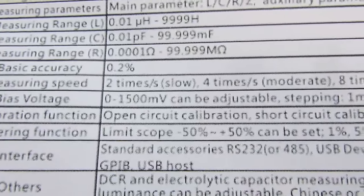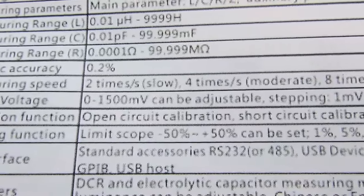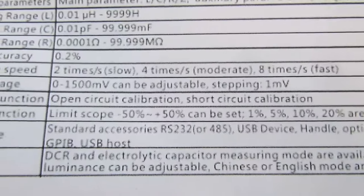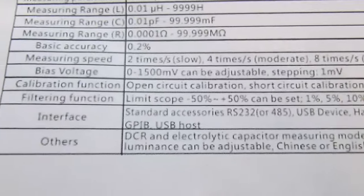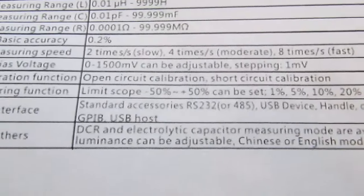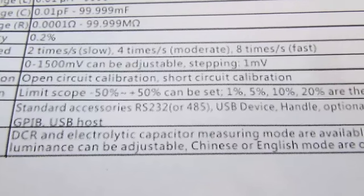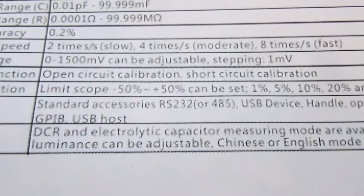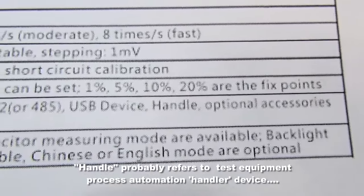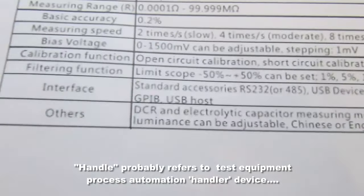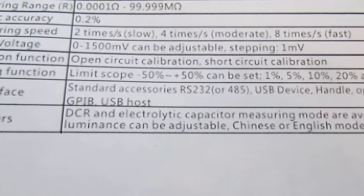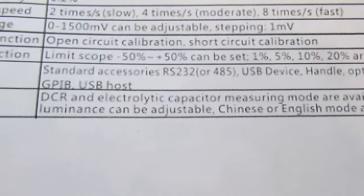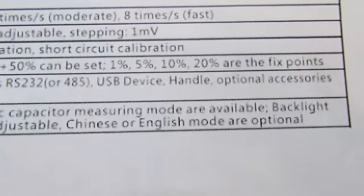It can have a bias voltage of 0 to 1500 millivolts, adjustable or stepping in 1 millivolt increments. Open circuit calibration, short circuit calibration. It has various interfaces like RS-232 or RS-485, USB, GPIB. It can measure DCR and electrolytic capacitor. Backlight luminance can be adjustable. Chinese or English mode are optional.